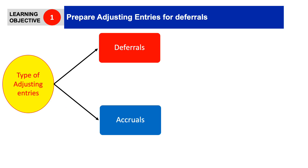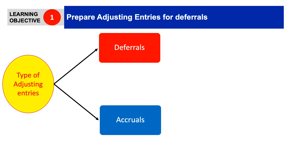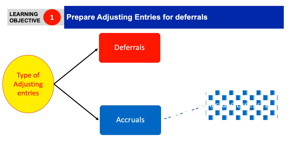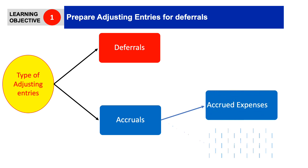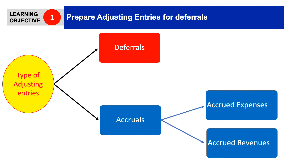We have two types of adjusting entries: deferrals and accruals. We've already covered all types of deferrals. Now we'll be talking about the accruals. In the accruals, we have accrued expenses and accrued revenues.